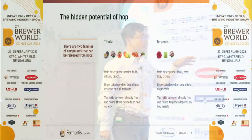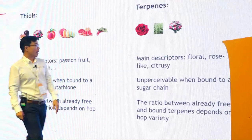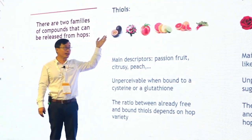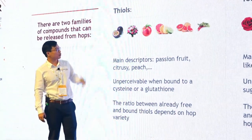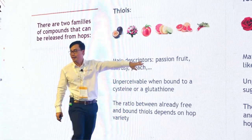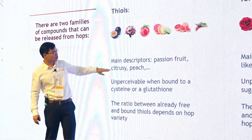For the hop aroma side, we have two very important families. The first is linalool, with main descriptors of floral, rose, light, and citrusy. The second, which is gaining interest recently, is thiols. The main descriptor for thiols is passion fruit — last year's favorite aroma. And this year maybe citrusy and peach. The overall character is tropical.